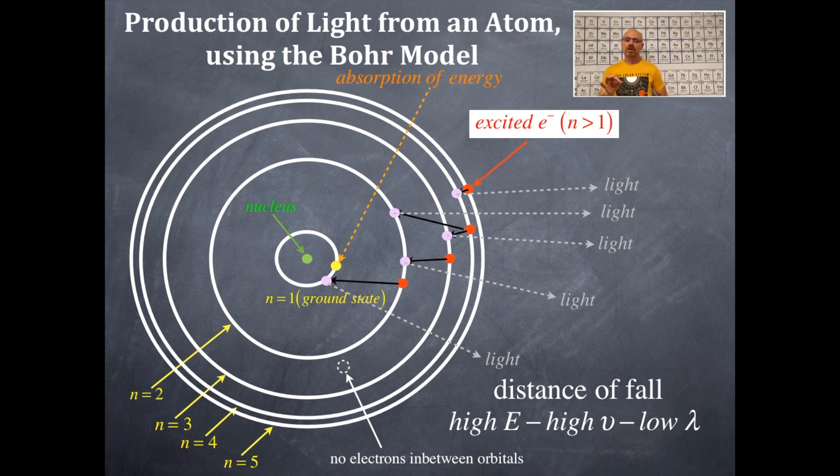So, high energy, the distance of fall, the greatest distance of fall in any one of these examples that I've given here, the greatest distance of fall is from n equals 2 to n equals 1. So, because that is such a large distance of fall, that would be the highest frequency, the highest energy, and the shortest wavelength.